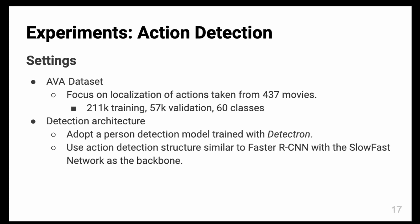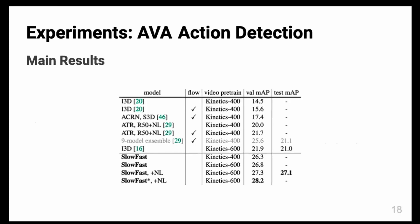They had to use a detection architecture for this task. They adopt a person detection model trained with Detectron. The detection model is not jointly trained with the action detection models. They use action detection structure similar to Faster R-CNN with the SlowFast network as the backbone.